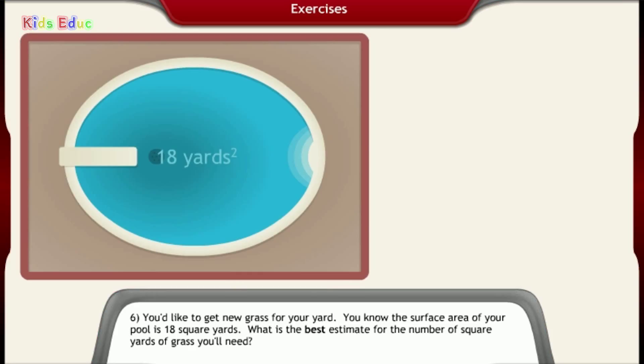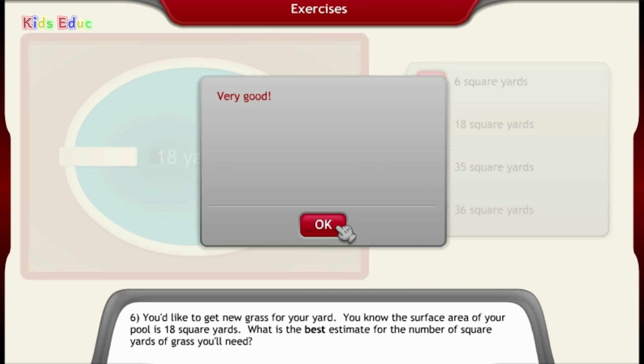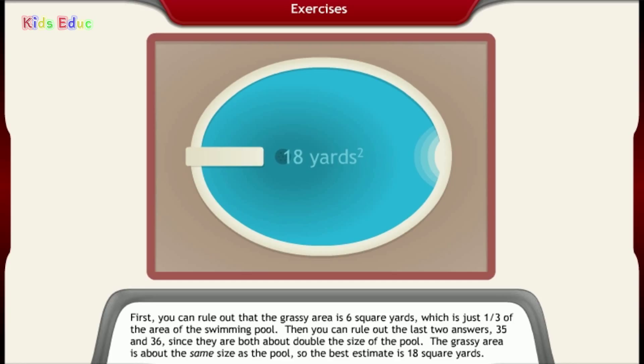Number 6, you'd like to get new grass for your yard. You know the surface area of your pool is 18 square yards. What is the best estimate for the number of square yards of grass you'll need? 6 square yards, 18 square yards, 35 square yards, 36 square yards. 18 square yards. Very good. First, you can rule out that the grassy area is 6 square yards, which is just a third of the area of the swimming pool. Then you can rule out the last two answers, 35 and 36, since they are both about double the size of the pool. The grassy area is about the same size as the pool, so the best estimate is 18 square yards.